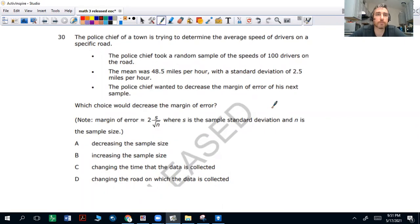Question 30, last question. The police chief of a town is trying to determine the average speed of drivers on a specific road. The police chief took a random sample of the speeds of 100 drivers on the road.